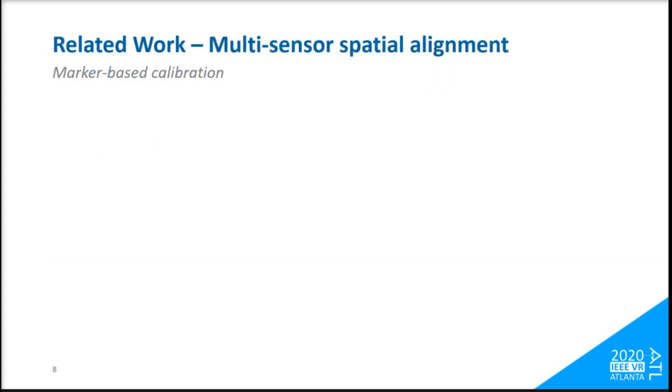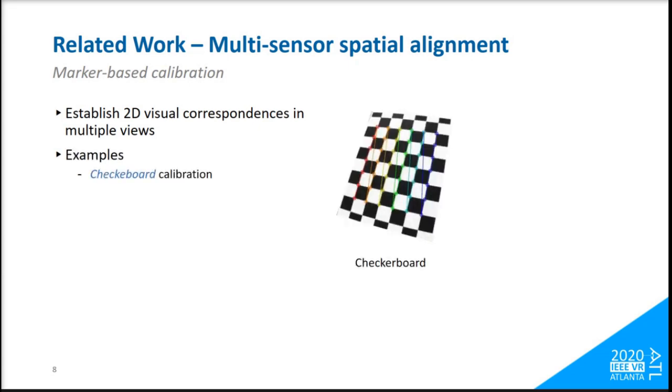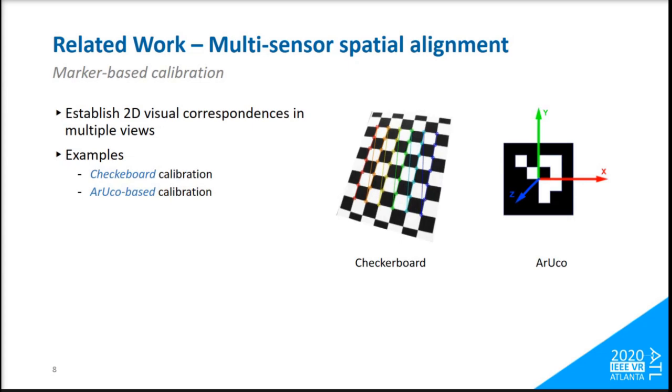Some classical methods for multi-sensor spatial calibration are based on known colored markers for correspondence establishment, exploiting either their a priori known physical dimensions, such as checkerboard, or others using complementary depth information to acquire a physical world understanding, if present.